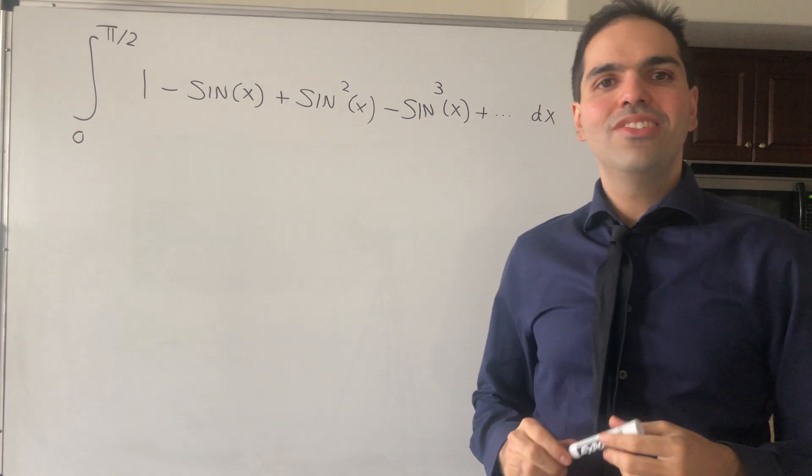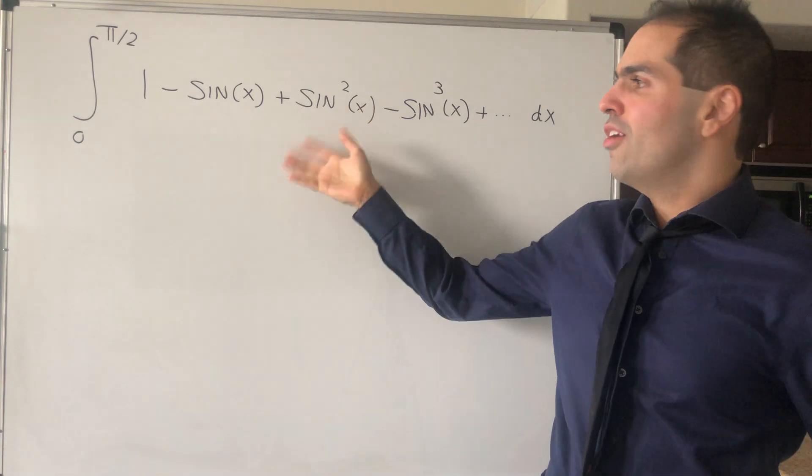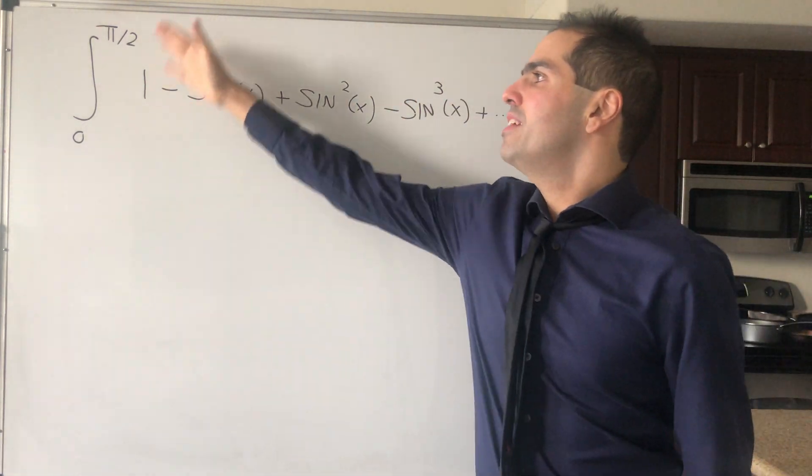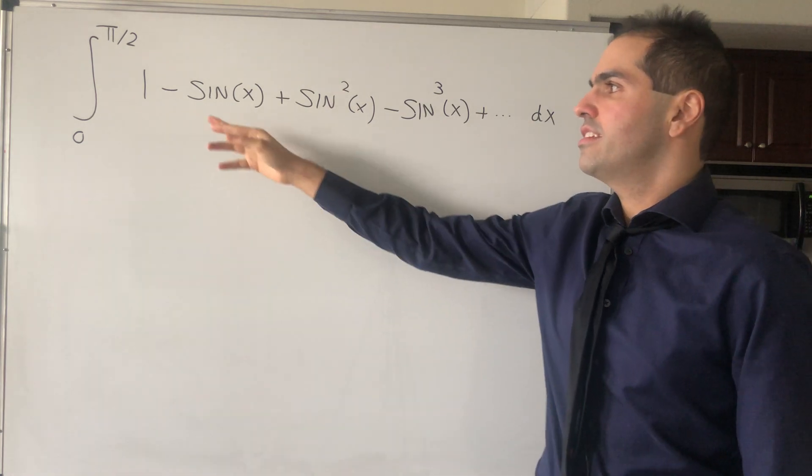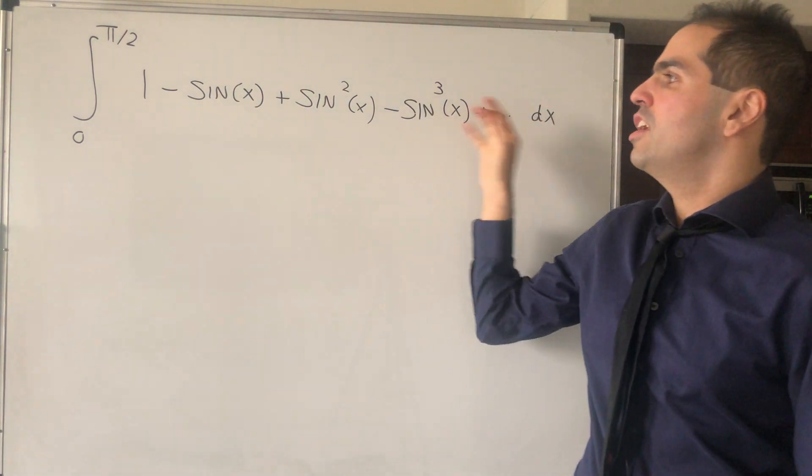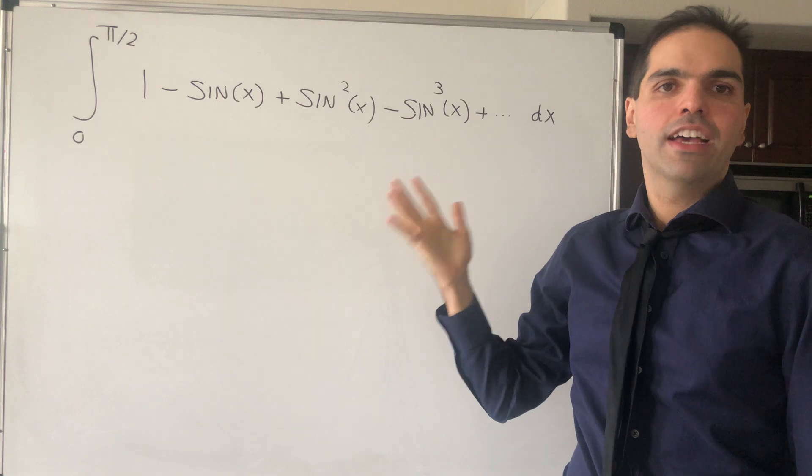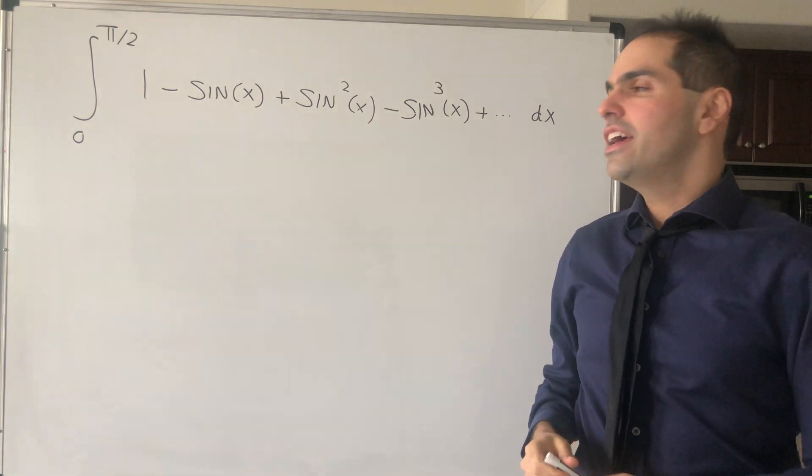All right, thanks for watching. Today we would like to evaluate the following funky integral, namely the integral from 0 to pi over 2 of the alternating series of 1 minus sin of x plus sin squared of x minus sin cubed of x, etc.